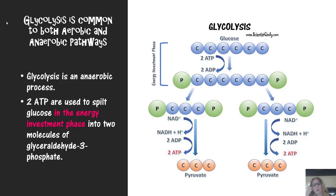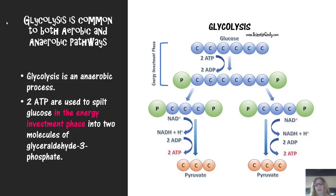Glycolysis is an anaerobic process, so we do not need oxygen in order to undergo glycolysis. Two ATP are actually invested at the beginning of the glycolysis process — this is called the energy investment phase. Those two ATP are used to split the glucose molecule, so the six carbon atoms that make up glucose are split into two individual molecules of three carbon atoms each.